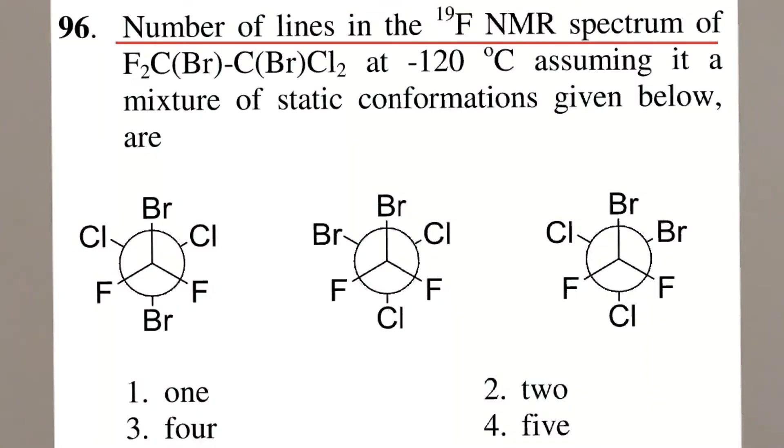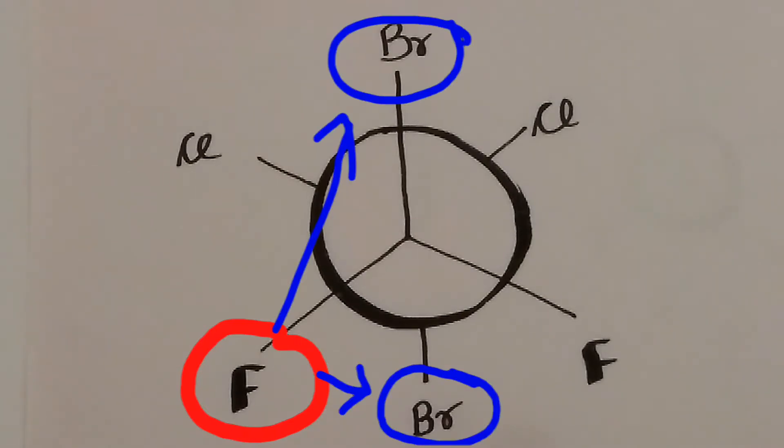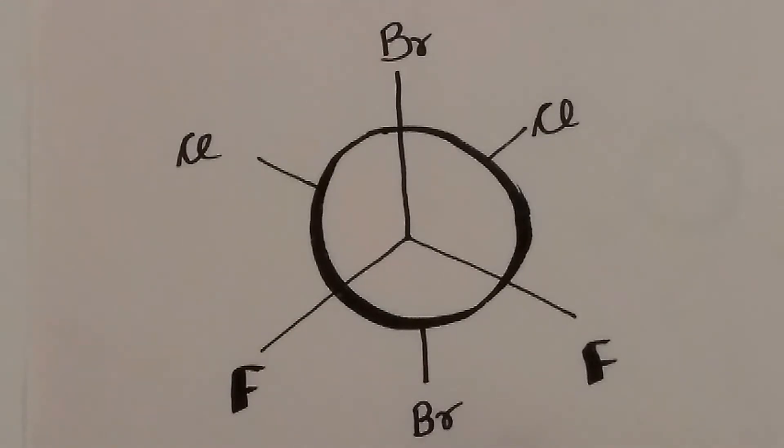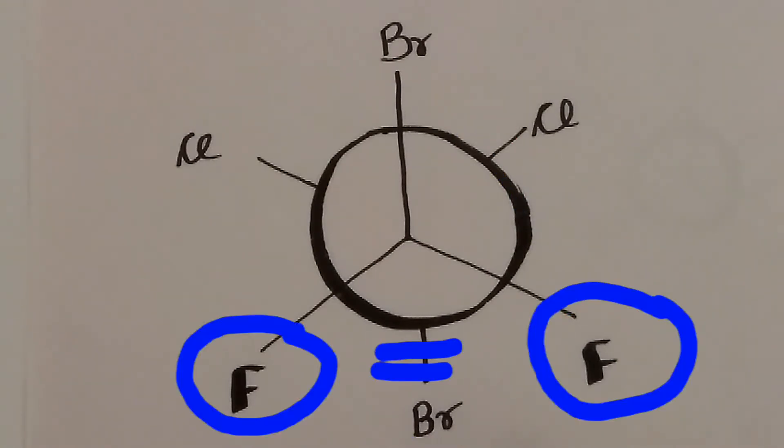The number of lines in the F19 NMR spectrum of these three complexes are: In the first complex, this fluorine is surrounded by two bromine and one chlorine atom. Similarly, this fluorine is surrounded by the same atoms, so both fluorines are in the same environment.